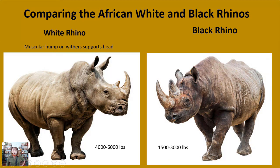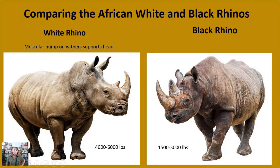Staying on the head, notice the ears: the white rhino has kind of taller, thinner ears, and the black rhino has shorter, rounder ears. The white rhino has a longer snout and jaw, while the black rhino's head is a little bit shorter and stumpier.